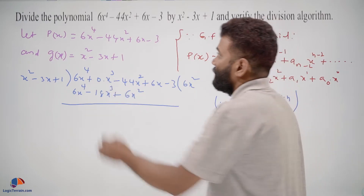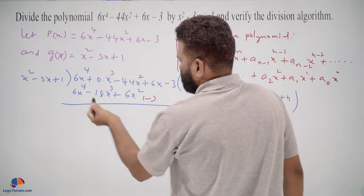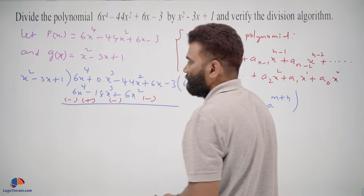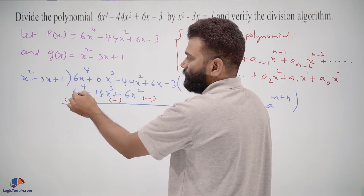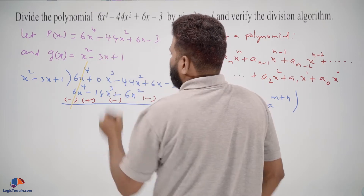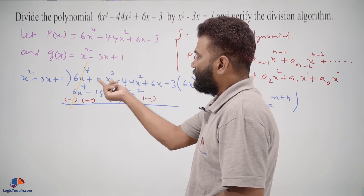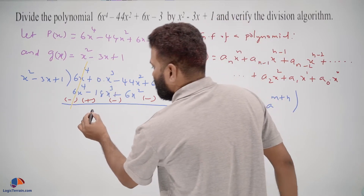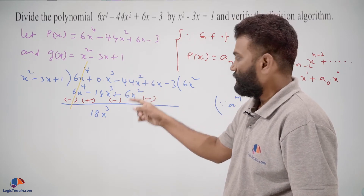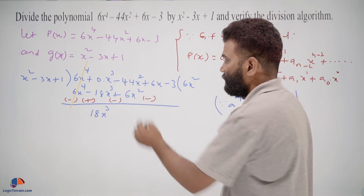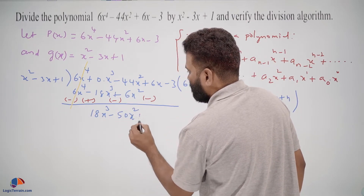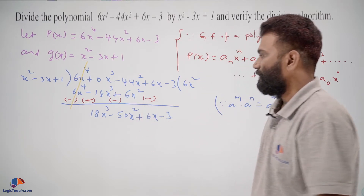We subtract, so signs change: plus becomes minus and minus becomes plus. 6x⁴ minus 6x⁴ cancels. We are left with 0x cube plus 18x cube giving 18x cube, and minus 44x square minus 6x square giving minus 50x square, plus 6x.